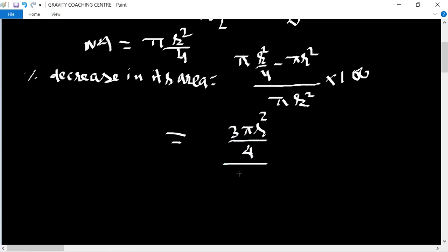Into 100. Pi R squared cancel ho gaya. 4 se 100 ko cancel ho gaya, 25. So 3 times 25 is 75 percent. This is the answer. Thank you for watching.